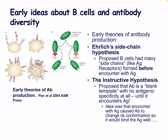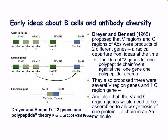Early theories about antibody production included Ehrlich's sidechain hypothesis, which proposed B cells had many sidechains like antigen receptors formed before antigen encounter. The instructive hypothesis proposed antibody was a blank template until encountering antigen, causing it to change conformation. The Dreyer-Bennett hypothesis proposed that variable and constant regions are products of two different genes — a radical departure from the one gene, one polypeptide dogma — with several variable region genes and one constant region gene, requiring V and C regions to be assembled.